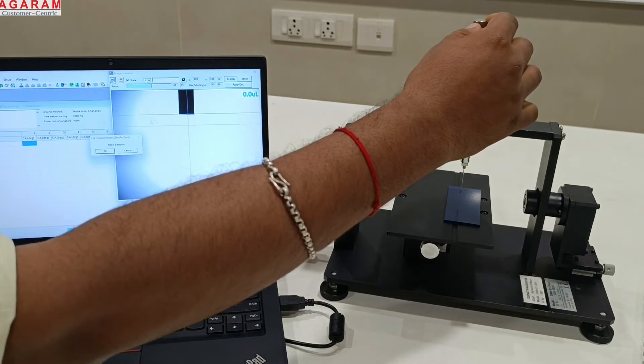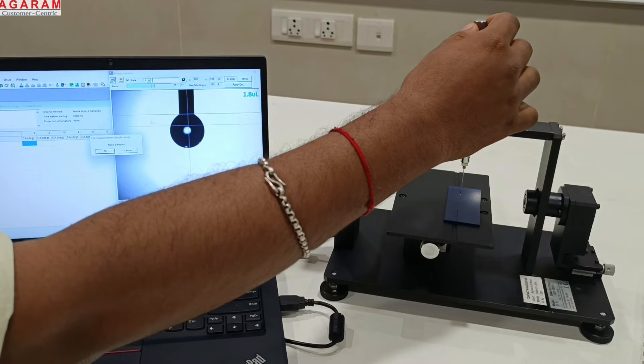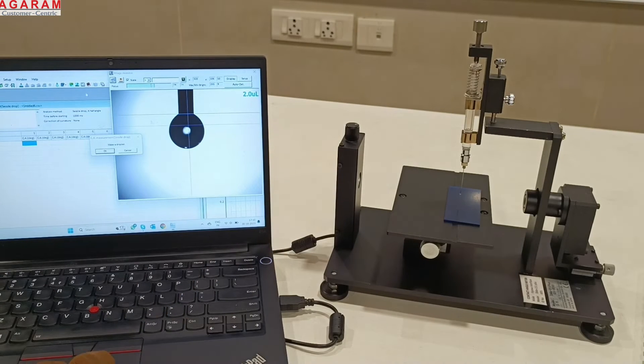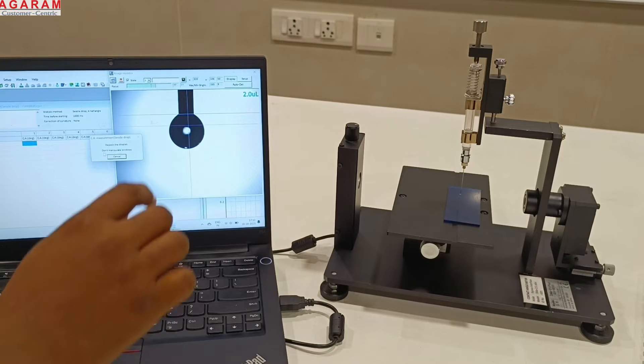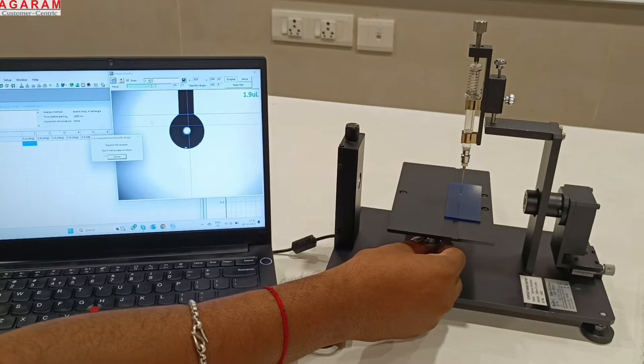Click measure button on the FAMAS software. Create a droplet by operating the thumbscrew. You can control the volume with precision of up to 0.1 microliter. Now deposit the droplet on the solid surface by moving the sample stage up.